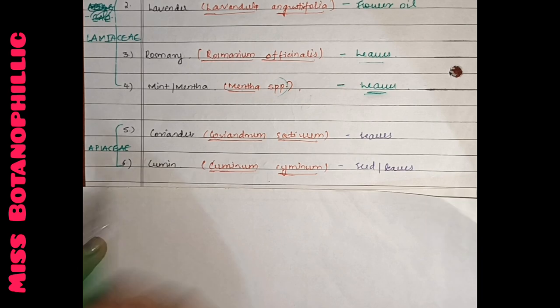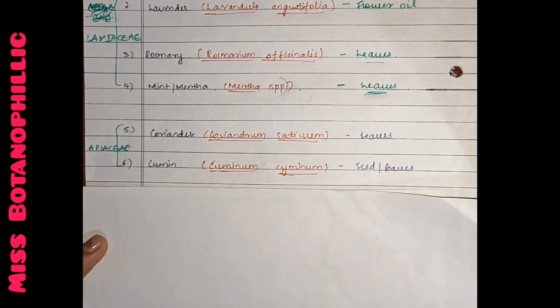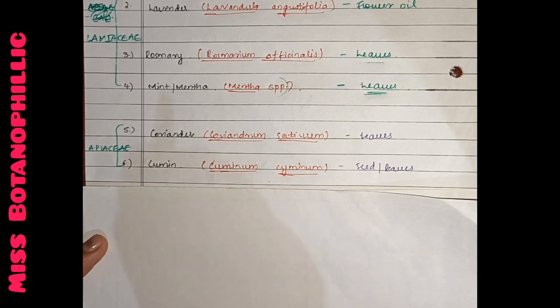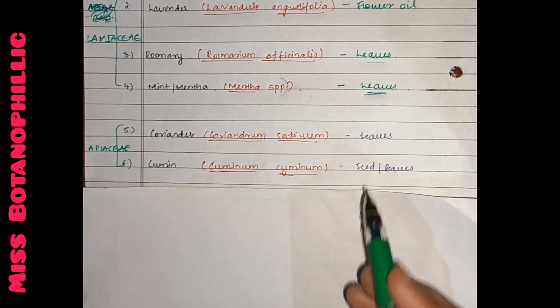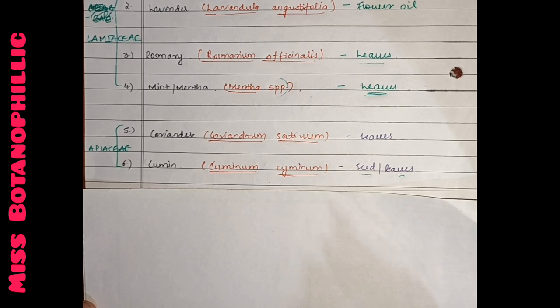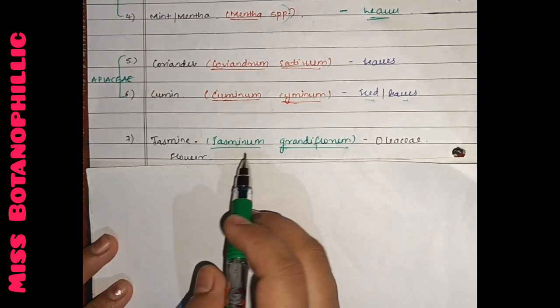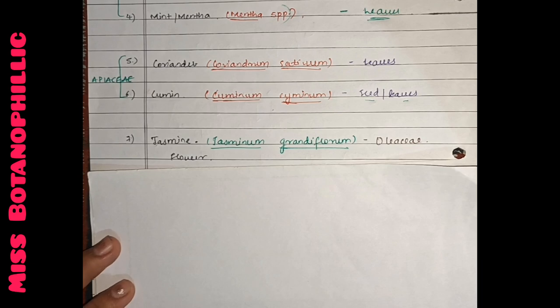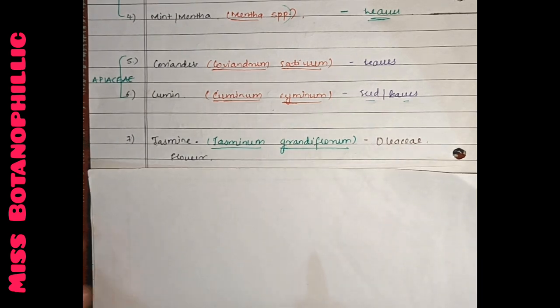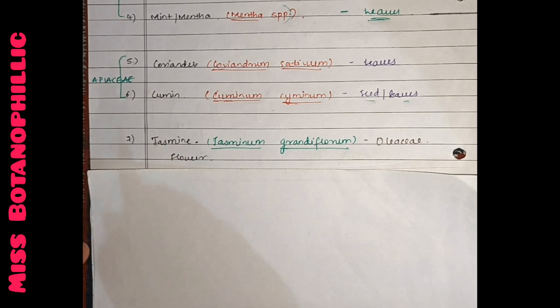Then cumin, we call jeera in hindi. Cuminum is the botanical name, Apiaceae family. Seed or leaves have characteristic smell. Jasmine is called Jasminum grandiflorum. It is from Oleaceae family. The smell is basically from the flower. The flower is white color, very aromatic. Even oils and perfumes are created.